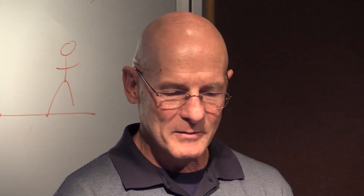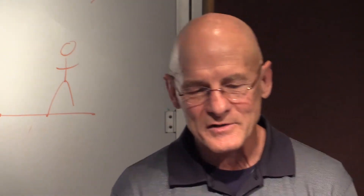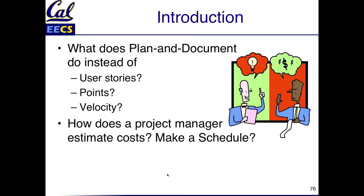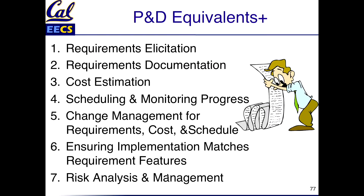This will take a little while. They don't use user stories, points, or velocity — so what do they do instead? It's pre-Agile. If you get to be the program manager, you're going to do requirements solicitation, requirements documentation, cost estimation, scheduling and monitoring the progress of the project, change management — kind of like version control for your schedule, cost, and requirements document.